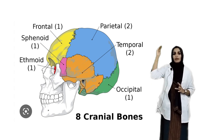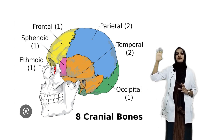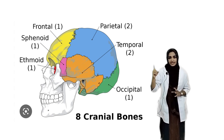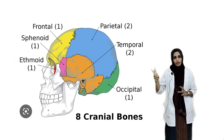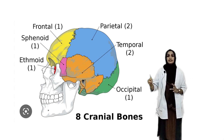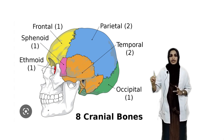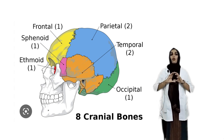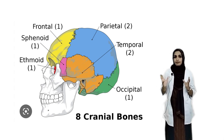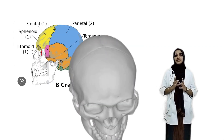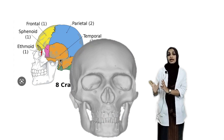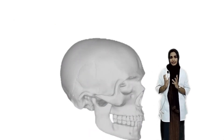The cranial bones consist of one frontal bone, two parietal bones, two temporal bones, one occipital bone and one sphenoid bone. All the cranial bones are flat bones with immovable joints known as sutures, which protect the brain.